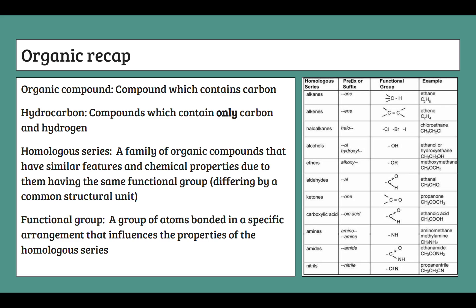Next let's look at the homologous series. A homologous series is a family of organic compounds that have similar features and chemical properties due to having the same functional group. Basically, homologous series all differ by a common structural unit — they're essentially the families. A functional group is simply a group of atoms bonded in a specific arrangement that influences the properties of the homologous series, making each series unique.